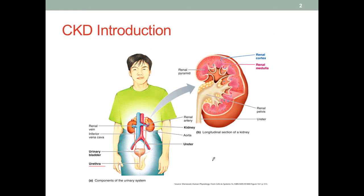If we look at the structure of the kidneys, we can see that this is an organ with different parts of soft tissue. For example, we have the renal cortex closer to the surface of the kidney with higher density tissue. Then we have the renal medulla, which is less dense, and then the renal pyramid. All of these radiate out from the center, and the center is where we find the hollow space called the renal pelvis.